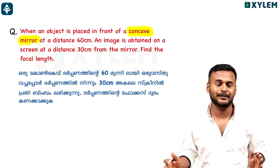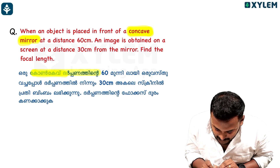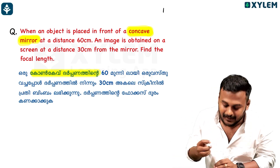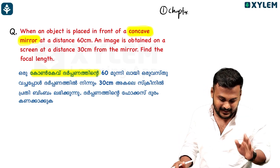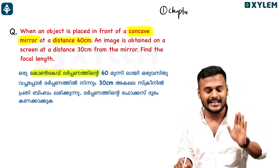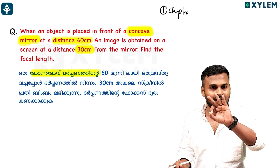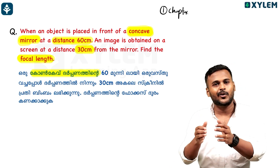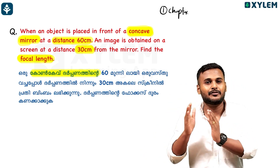This chapter is called Darpana — the Concave Darpana. Let's identify the chapter and set it up. We are learning about the mirror. The object is 60 cm, the image is 30 cm, and the focal length — let's say the focal length is 50 cm. But the object is 60 cm.